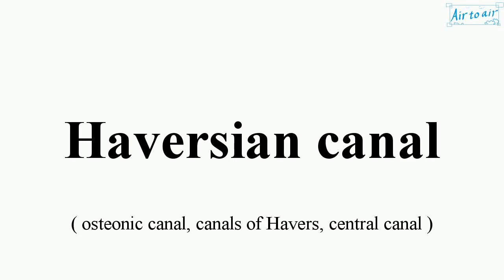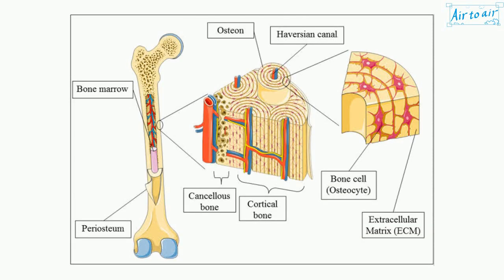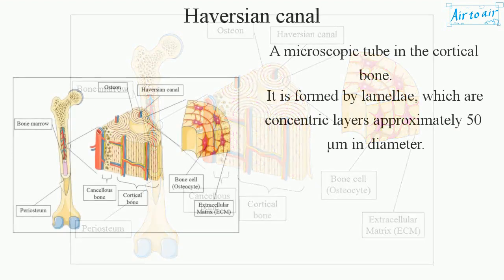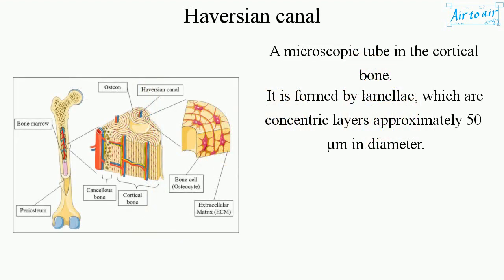Haversian Canal: a microscopic tube in the cortical bone. It is formed by lamellae, which are concentric layers. Approximately 50 micrometers in diameter.